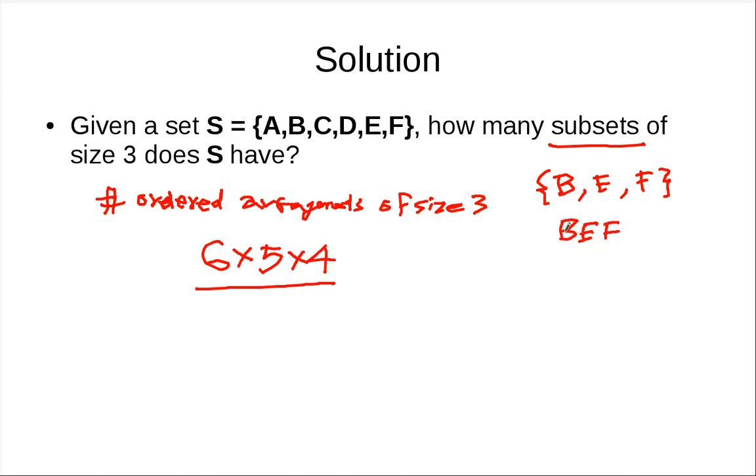So the first way you can count it like BEF, or BFE. How many are left? EBF, EFB, and finally FBE and FEB. So that's six ways, and this is true for every subset.